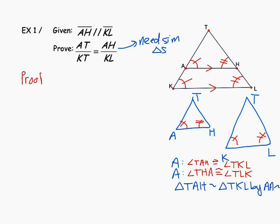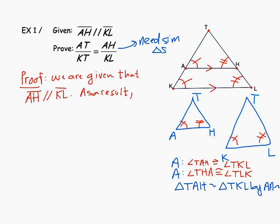The proof begins by restating what we're given: AH is parallel to KL. From that pair of parallel segments, we get two pairs of congruent corresponding angles. As a result, angle TAH is congruent to angle TKL, and angle THA is congruent to angle TLK, because corresponding angles are congruent when lines are parallel.